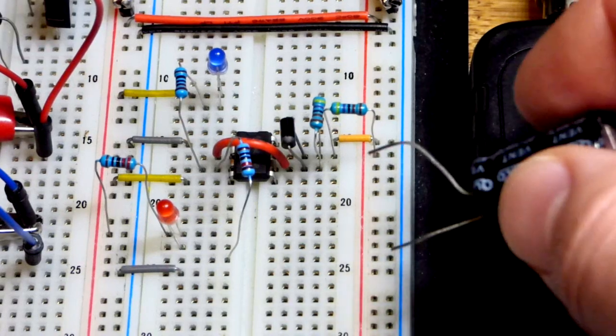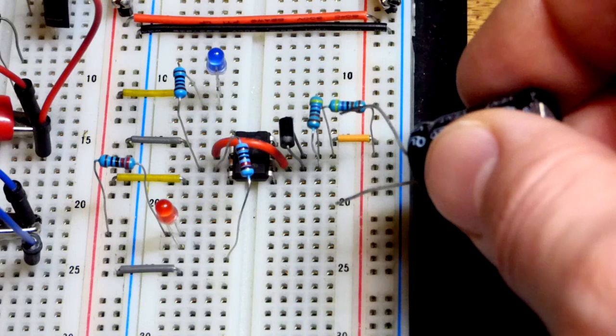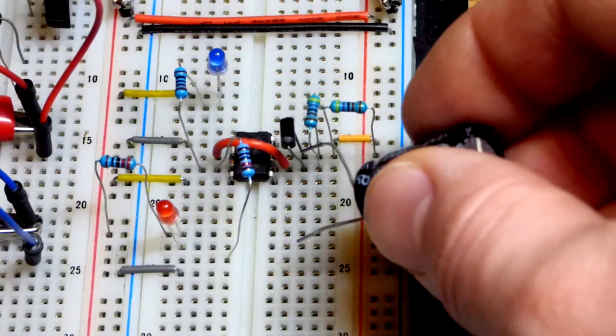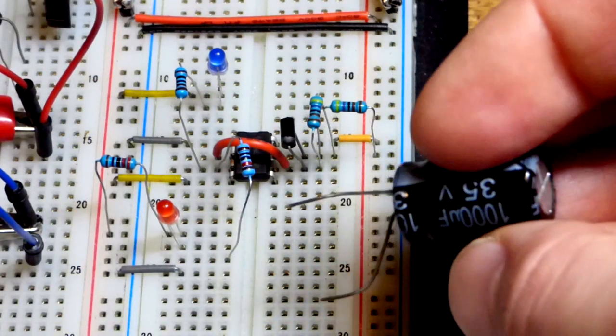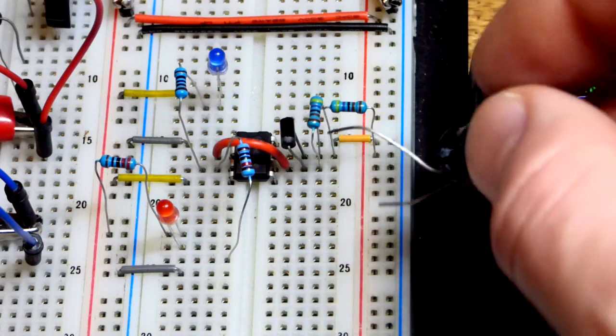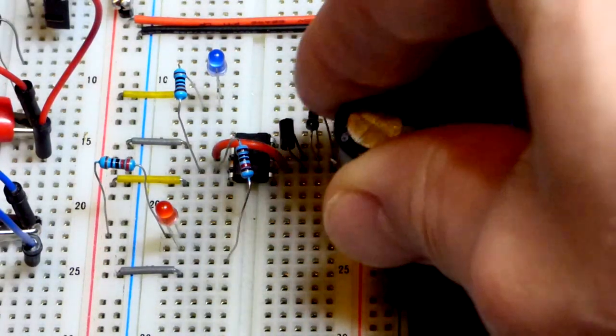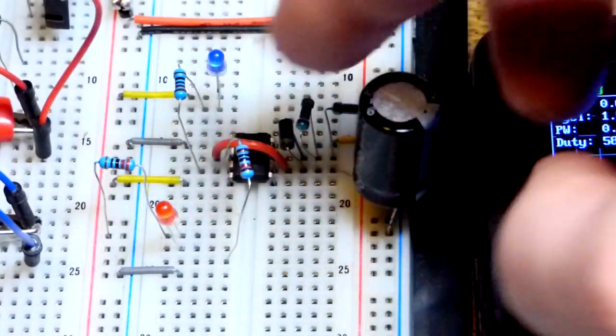So now here we have the circuit almost completely built. We have a resistor right there that's 4.7 kilo ohms 4,700 ohms and it comes to that diode and the other resistor. So the diode is going to let current go through relatively freely to the 10 kilo ohm resistor when it is charging. And then when it's discharging it's going to go through this other 4,700 ohm resistor to the discharge pin.